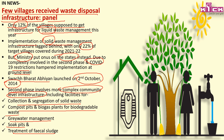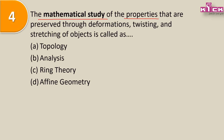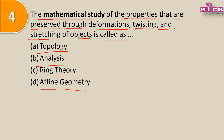Fourth question: The mathematical study of the properties that are preserved through deformation, twisting and stretching of an object is called? यानी किसी भी article की property को completely change कर दो, twist कर दो, और उसके बाद भी उसकी property preserved रहती है - deformation के through भी। Options are: topology, analysis, ring theory, and affine geometry. Answer is A - topology.